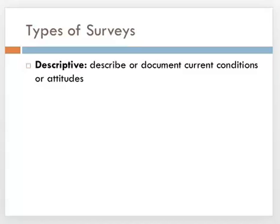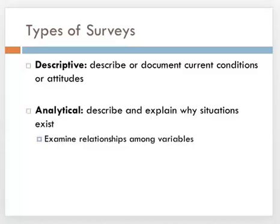An analytical survey attempts to describe and explain why situations exist. In this approach, two or more variables are usually examined to investigate research questions or to test research hypotheses. The results allow researchers to examine the interrelationships among variables and to develop explanatory inferences.